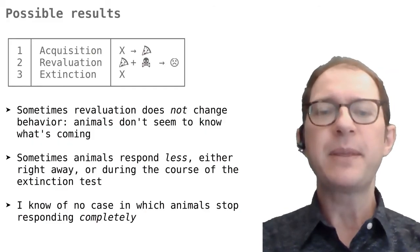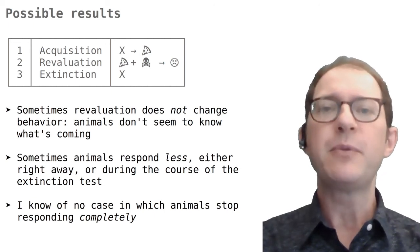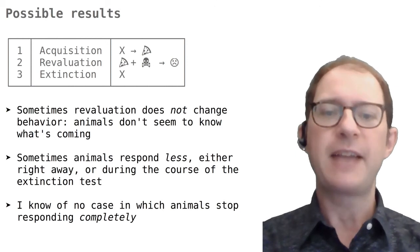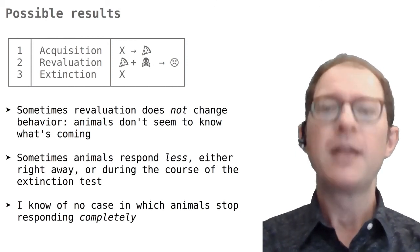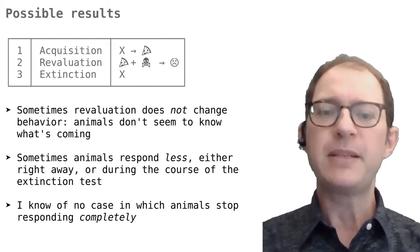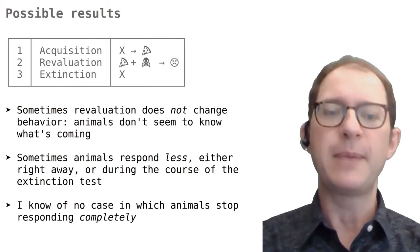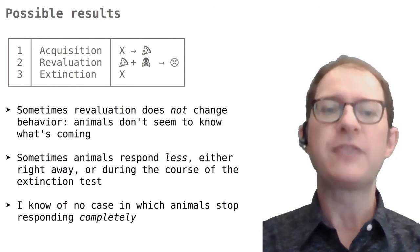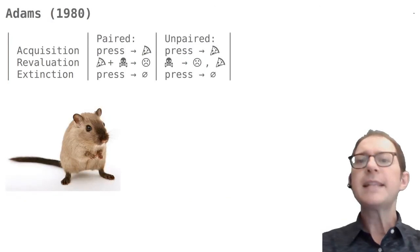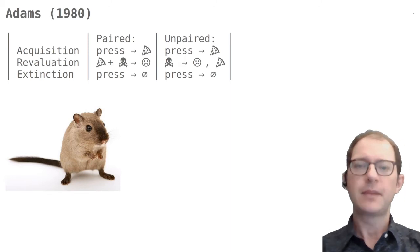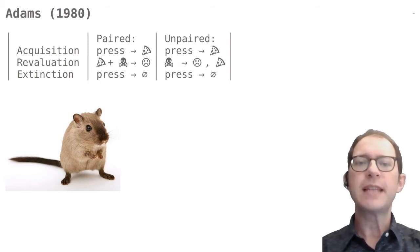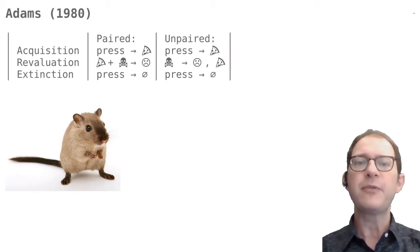Let's look at an experiment by Adams that used two groups of rats. The group called 'paired' followed exactly the basic revaluation design: rats were first trained to press the lever for food, then the revaluation treatment consisted of feeding them the food and giving them a bellyache with a drug, and then they were tested to see how much they would press the lever. The 'unpaired' group received similar training but with a crucial difference — the rats were given a bellyache not after consuming the food, but at another time.